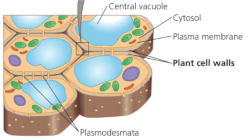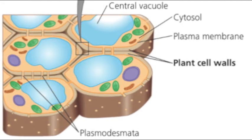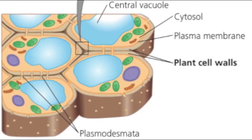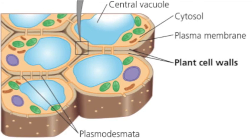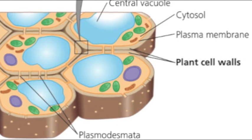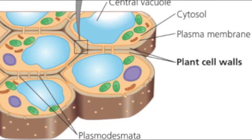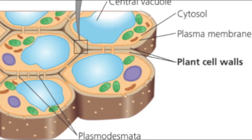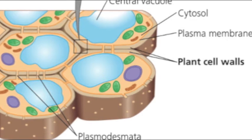Now let's travel to the cell wall, which distinguishes plant cells from animal cells. The plant cell wall provides structure and protection to the cell. It is made up of cellulose fibers embedded in polysaccharides and proteins. The cell wall keeps the shape of the cell and provides a filtering mechanism to keep cells from over-expanding with water.